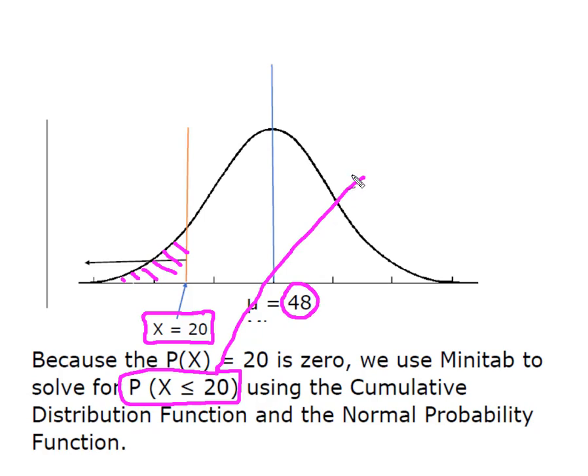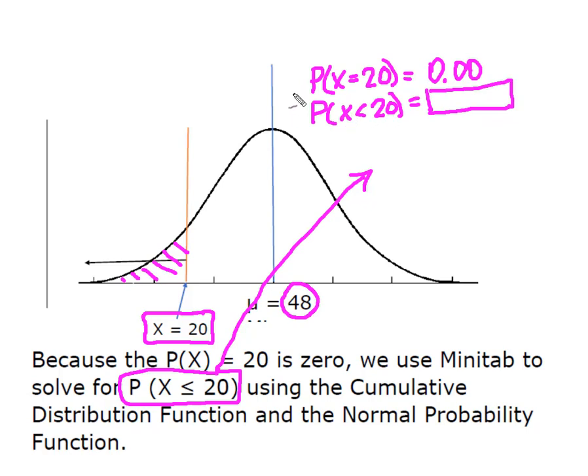Given what I just talked about, what Minitab is really going to do is find the probability that X is exactly equal to 20. From what we just learned, we know that probability is going to be zero. Then Minitab is going to find the probability that X is less than 20. We know that's going to be a non-zero probability. We just don't know what it is yet. Then in the background, Minitab is going to add these two together to come up with the probability that X is less than or equal to 20, which will be this non-zero probability plus this zero probability, giving us our answer.